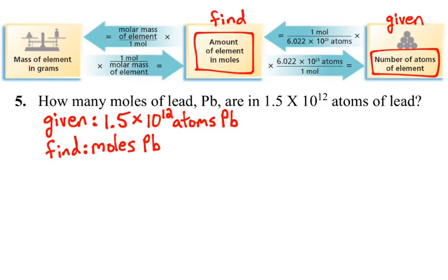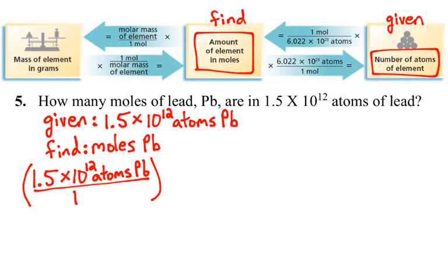We take our given, which is the number of atoms of lead, and we write it out in fractional form: 1.5 times 10 to the 12 atoms of lead over 1. What we need to do is convert that into moles of lead. If we look at our diagram, it gives us a pathway to follow. We can take our number of atoms of our element and multiply it times 1 mole over 6.022 times 10 to the 23rd atoms, or Avogadro's number of atoms.